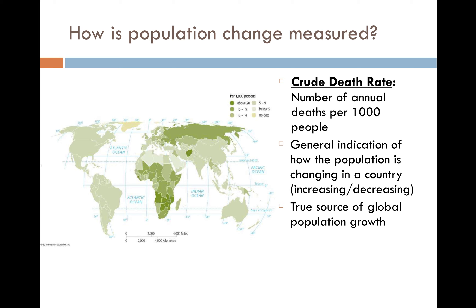On the opposite end of the spectrum is our crude death rate — the number of annual deaths per 1,000 people. This is similarly a general indication of how the population is changing in a country. Those two statistics together can help us understand the overall population change — how many people are being born, how many people are dying. The decrease in the crude death rate is the true indication of why the world's population is changing. So in your notes: why is the world's population increasing so much? On the right-hand side, put 'decrease in crude death rate.'